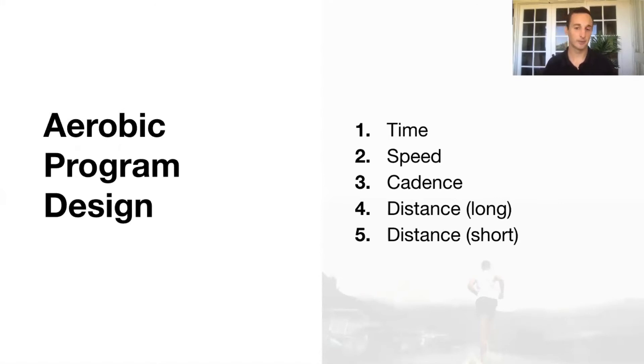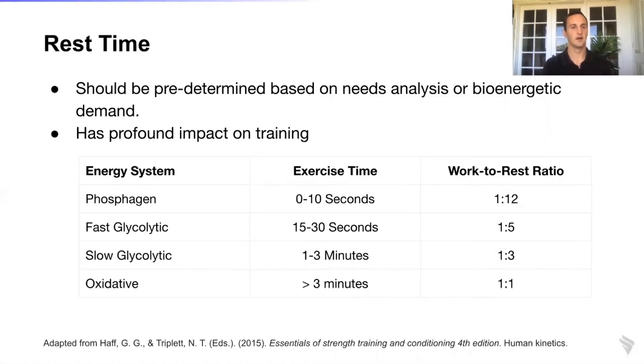When considering aerobic program design, some of the other variables included in the Everfit platform: you have time - you're going to have this individual run for 10 minutes, 30 minutes, an hour, two hours, whatever it might be. You have speed, so if they're using a treadmill this is a good way to prescribe someone to train at a specific speed or pace. Cadence - how many steps an individual is taking per minute. And then distance - if they're doing long distance training or short distance training, are they going to be doing repeated sprints or repeated 200-meter workouts, or a long slow training style session?